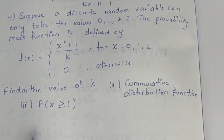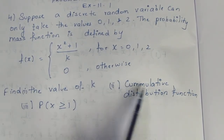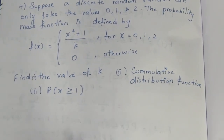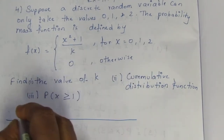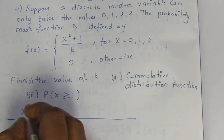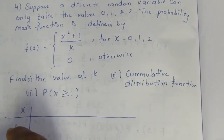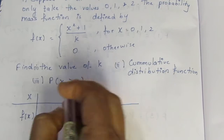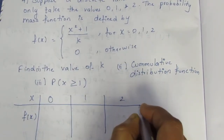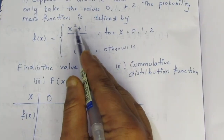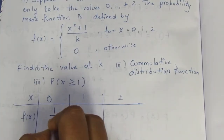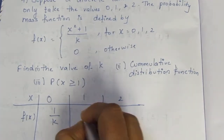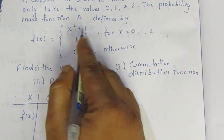We need to find k and the cumulative distribution function. Substituting the values: for x = 0, x² + 1 = 0 + 1 = 1, so f(0) = 1/k. For x = 1, 1² + 1 = 2, so f(1) = 2/k. For x = 2, 2² + 1 = 5, so f(2) = 5/k.